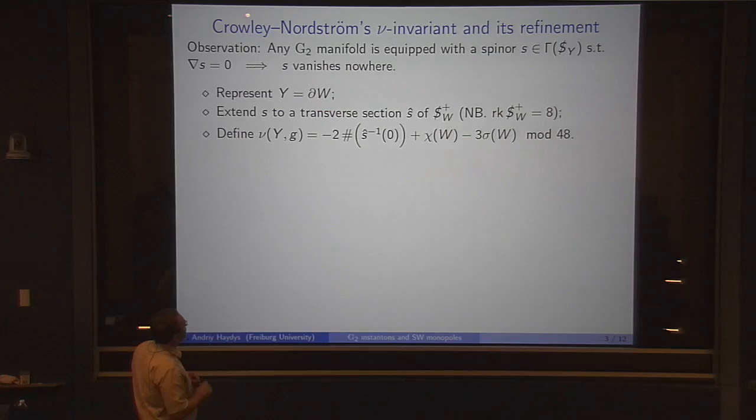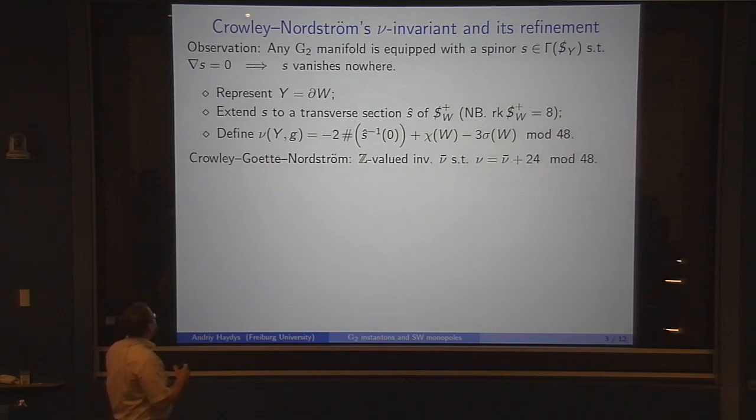If you represent your G2 manifold as a boundary of some 8-manifold and extend your spinor to a transverse section of the positive spinor bundle, which is of rank 8, then if you require that this is transverse, it has a finite number of zeros which are not on the boundary. You cook up the following combination: you take essentially the number of zeros of your extension, count it with signs, and you get this topological term and count this modulo 48. This turns out to be independent of choices you made.